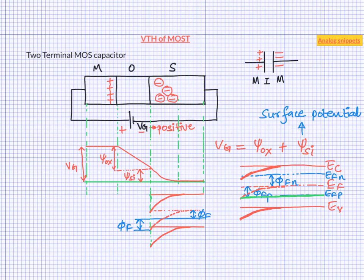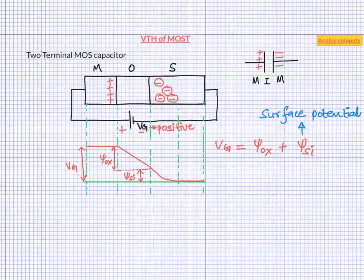So we have figured out one part of the threshold voltage, which is 2*phi_f, and it depends on substrate doping concentration. Higher the substrate doping concentration, bigger this voltage — and this matches our previous understanding. Now, how about the voltage across the oxide? The voltage across the oxide is simply the charge across the oxide divided by the oxide capacitance. Since both quantities are proportional to the surface area, we can work per unit area. As discussed earlier, charge in the semiconductor side is made of two components: the charge due to immobile acceptor ions, also known as depletion charge, and the charge due to minority electrons, also known as inversion charge.